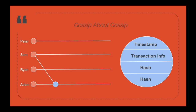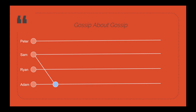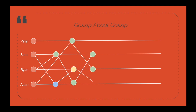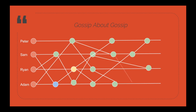This is called an event. When Sam gossips to Adam, an event is created by Adam containing all this information, and the same information is passed on to different neighbors. This is how gossips spread across the network — information is passed in a similar fashion across all nodes. This is the first feature of hashgraph.